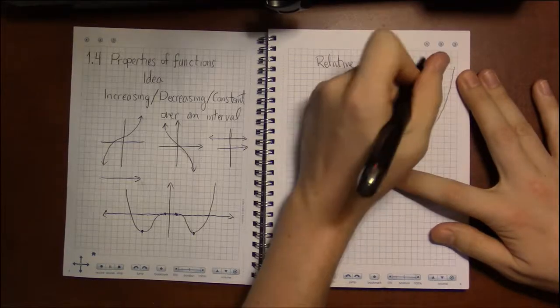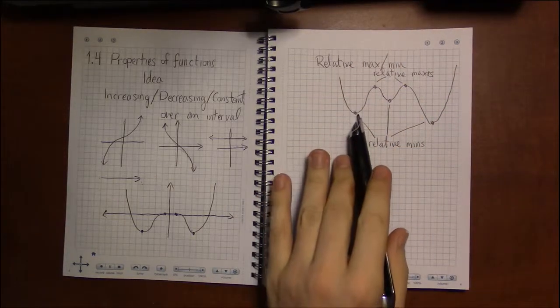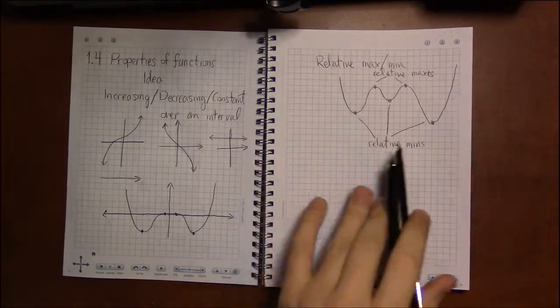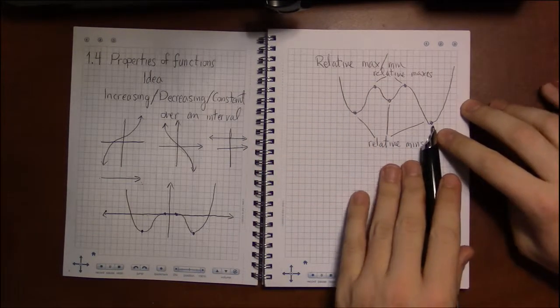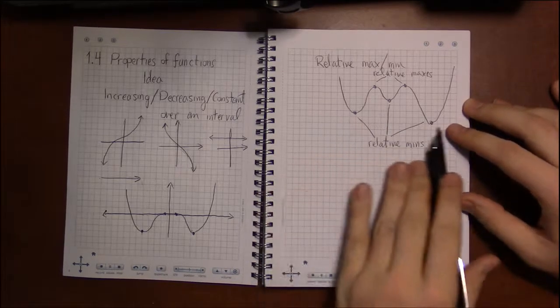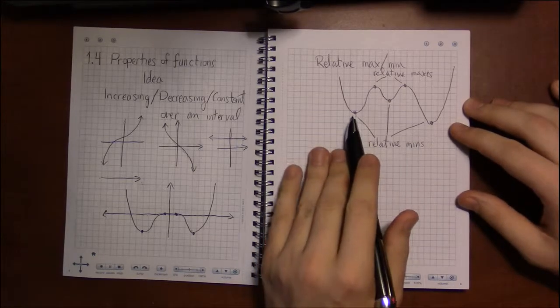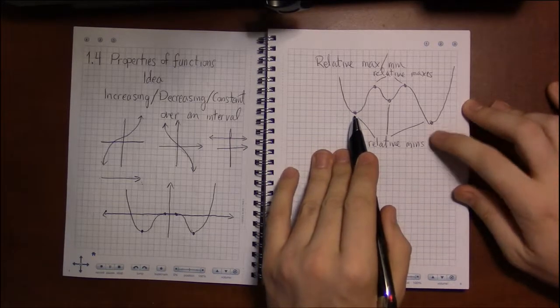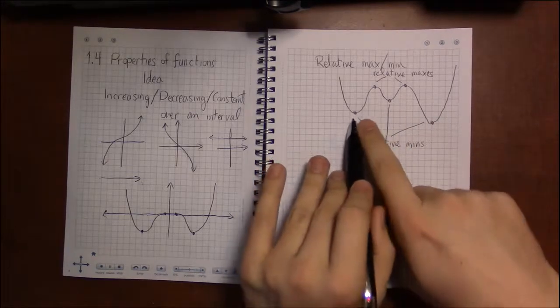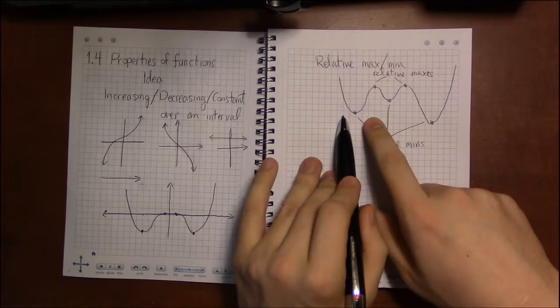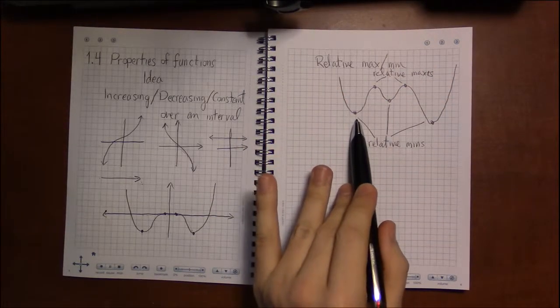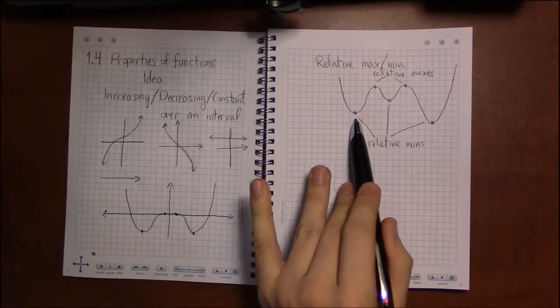The idea is that they're not the lowest or the highest points on the graph. In this case, this relative min is what we would call an absolute min—it is absolutely the lowest point on the graph—whereas this is only a relative min. There are other values if we go far enough out, but in a relative neighborhood, you know, in a small enough region, this is the smallest Y value that you can see in a small region.